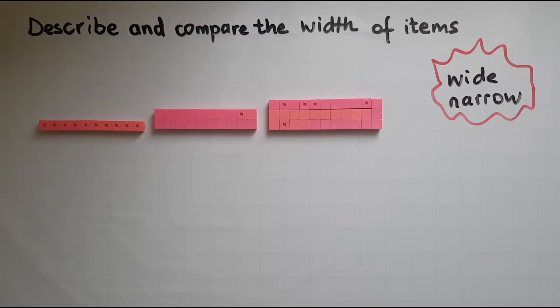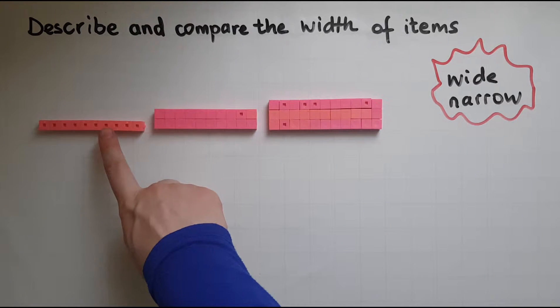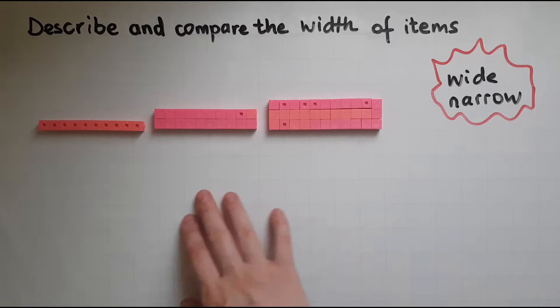So if I'm to describe them, this would be the wide one and this would be the narrow block.